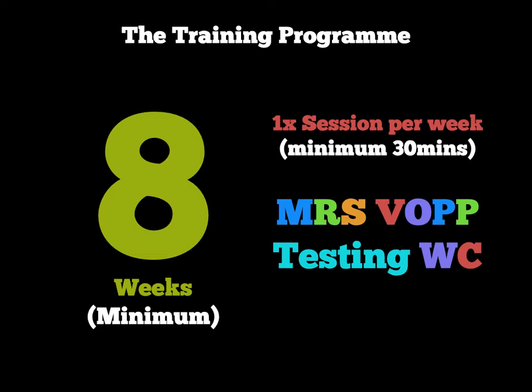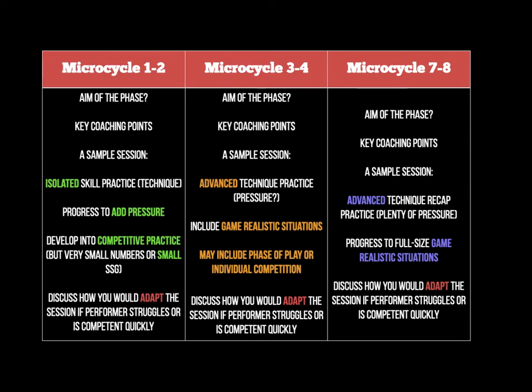The best way to structure the development plan is to break the eight weeks into three two-week sections. Remembering your theory of periodisation, a microcycle can be up to three weeks. So you'll create three microcycles. In each microcycle there are very common and similar things to cover: the aim of what you want the athlete to achieve by the end of that microcycle, stated very clearly.